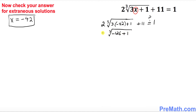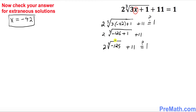That gives the cube root of negative 125, with 2 outside, plus 11 — is it equal to 1? The cube root of negative 125 equals negative 5.